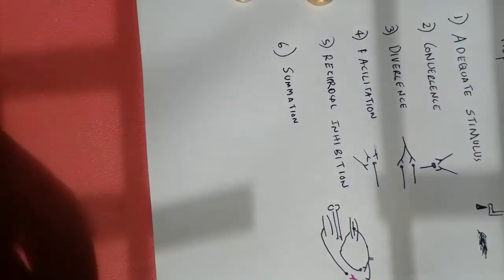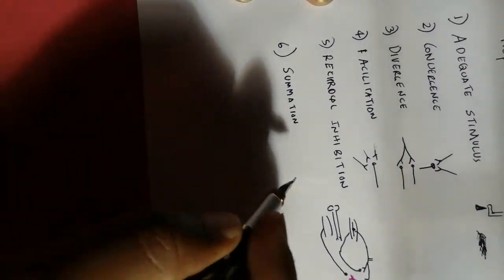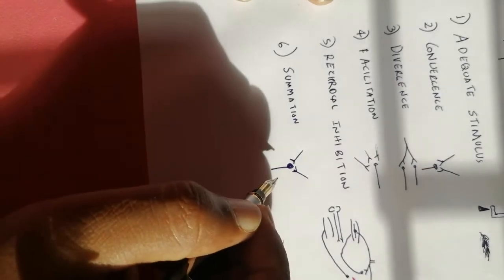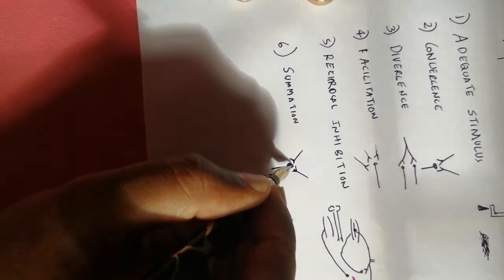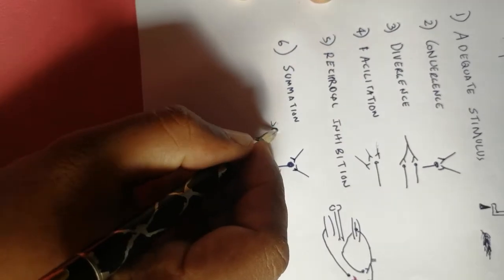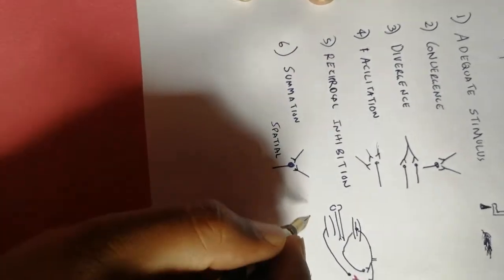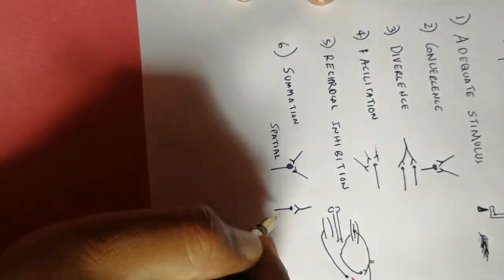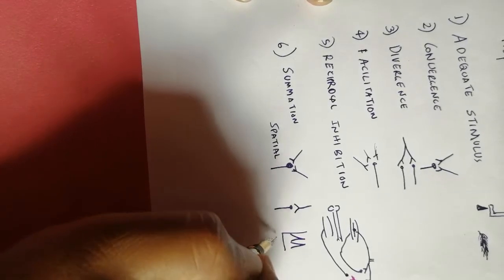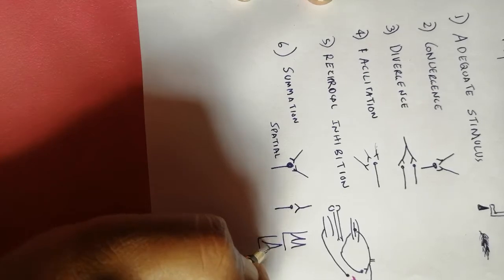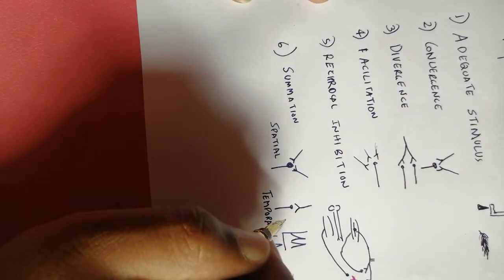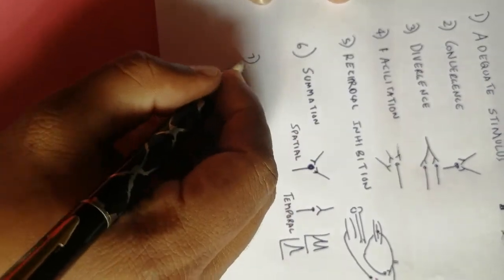Spatial summation is when one neuron has two synapses on it at different points in space, both being stimulated so the impulses add up. Temporal summation is when there is only one synapse, but the impulse happens twice close together in time — close enough that they can merge. Temporal means time. The seventh concept is occlusion.